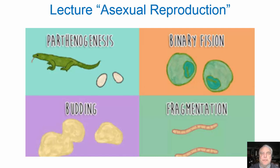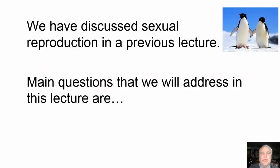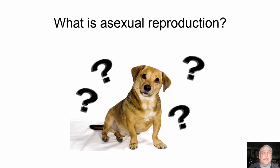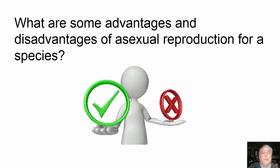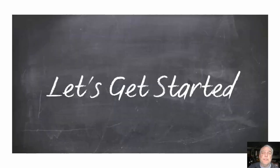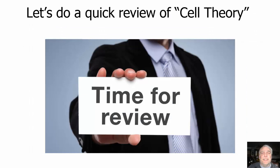Hello again everybody, welcome back to a new screencast lecture. Tonight's topic is asexual reproduction. We will be addressing certain questions, kind of like we did in a previous lecture when we discussed sexual reproduction. The main questions we are going to address are: what is asexual reproduction, how are sexual reproduction and asexual reproduction different, and what are some advantages and disadvantages of asexual reproduction for different species?